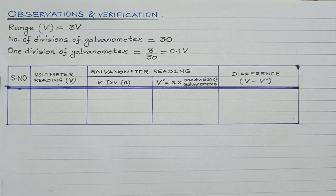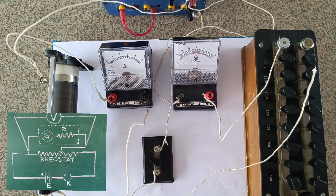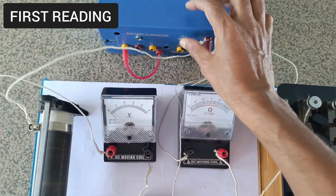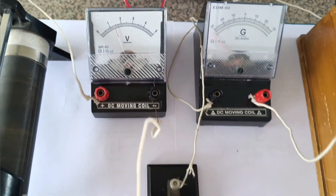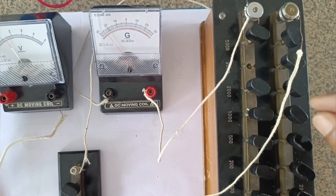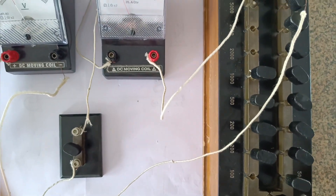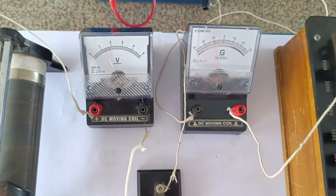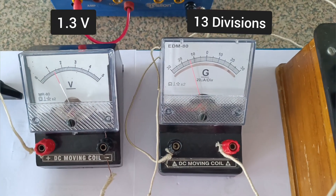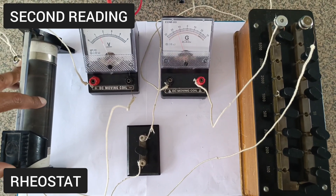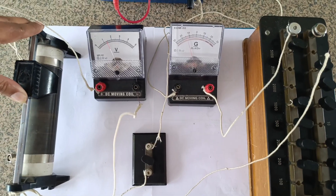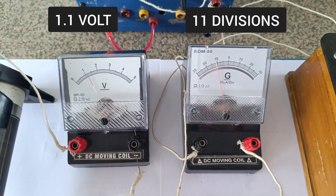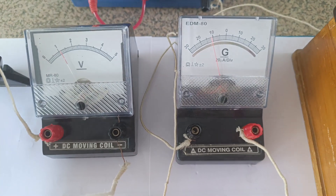Now let's check the readings. Using a resistance of 4111 ohm, the galvanometer shows a deflection of 13 divisions while correspondingly the voltmeter shows a reading of 1.3 volt. The steps are repeated. Again taking readings of the voltmeter and galvanometer by changing the resistance from the rheostat, the deflection of the galvanometer is 11 divisions and correspondingly the voltmeter reads 1.1 volt.